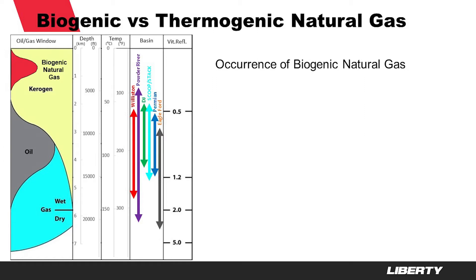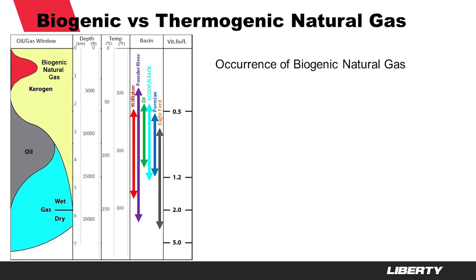There are two main sources of natural gas. First of all, biogenic. Natural gas originated from the decomposition of cellulose from trees and plants by microorganisms. This is a complex process, but ultimately creates methane in our everyday environment and at depths up to about 3,000 feet.